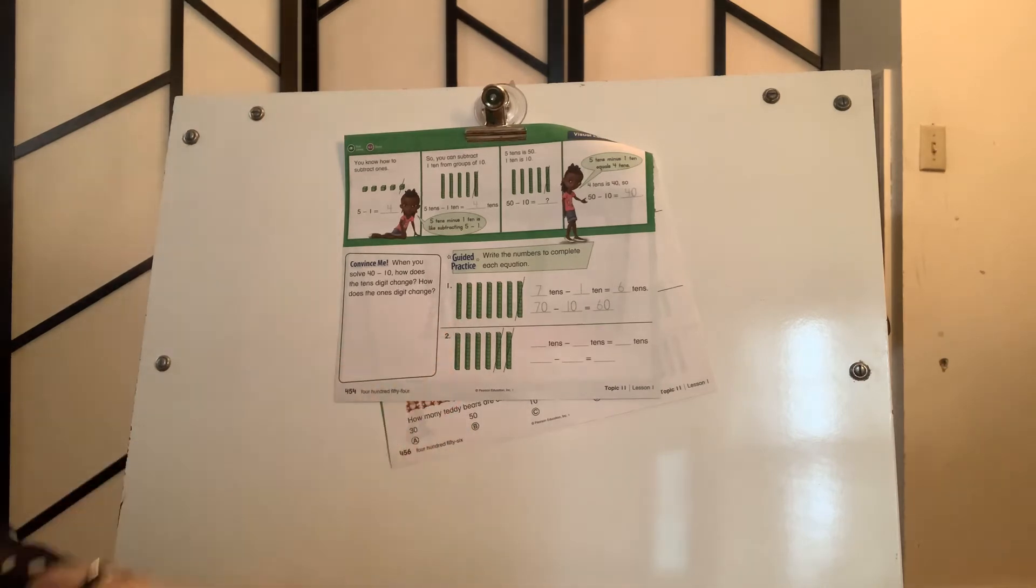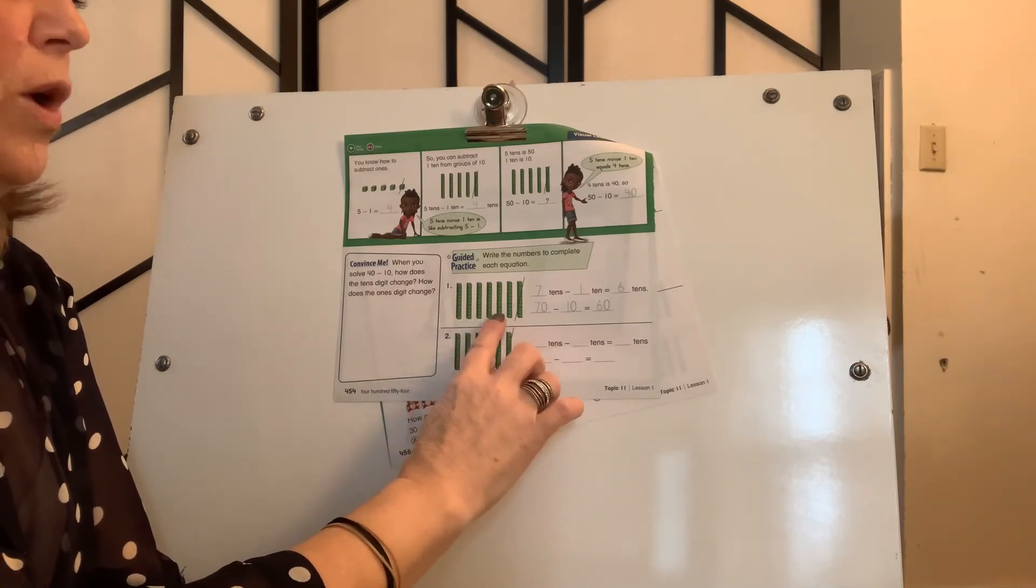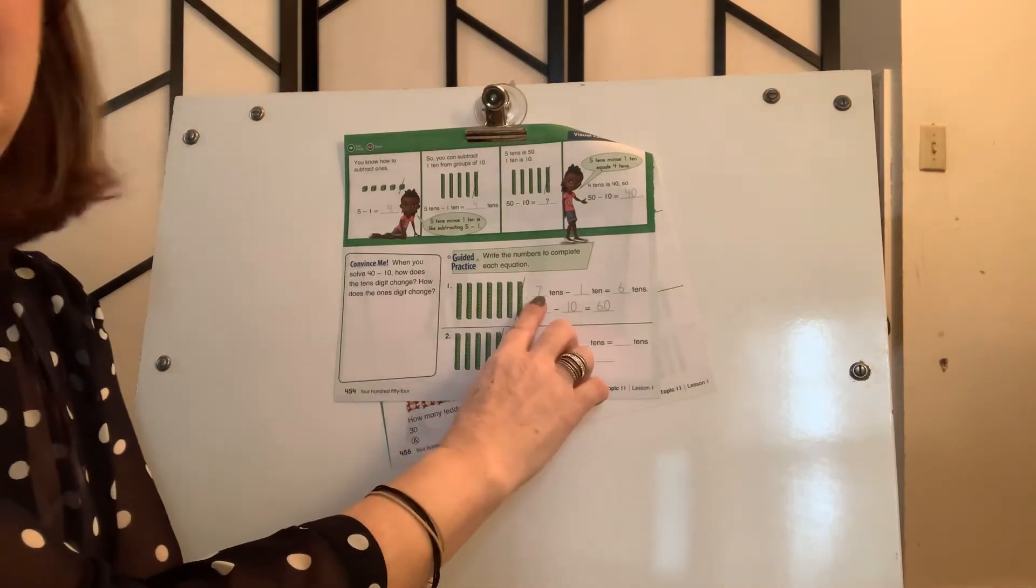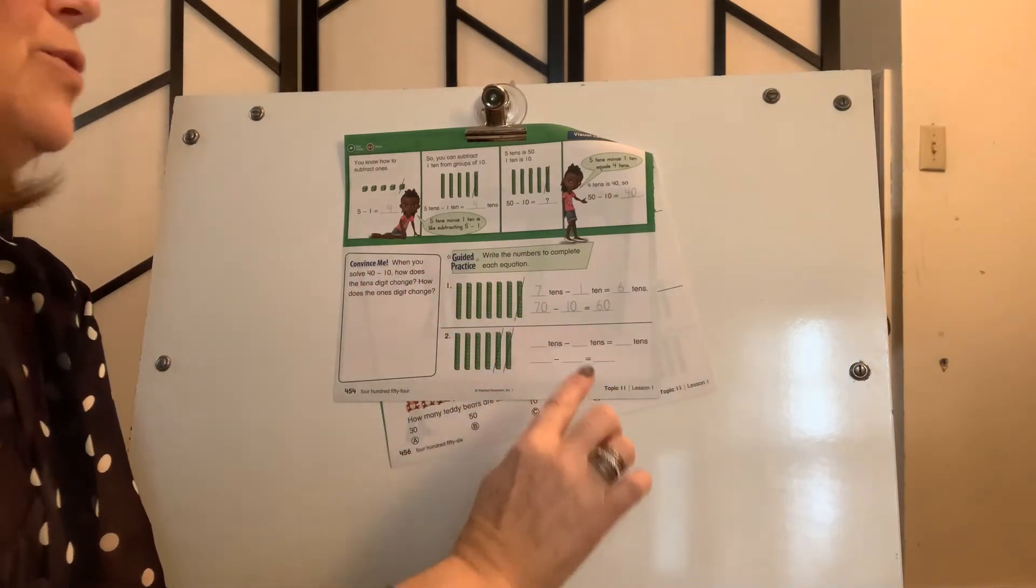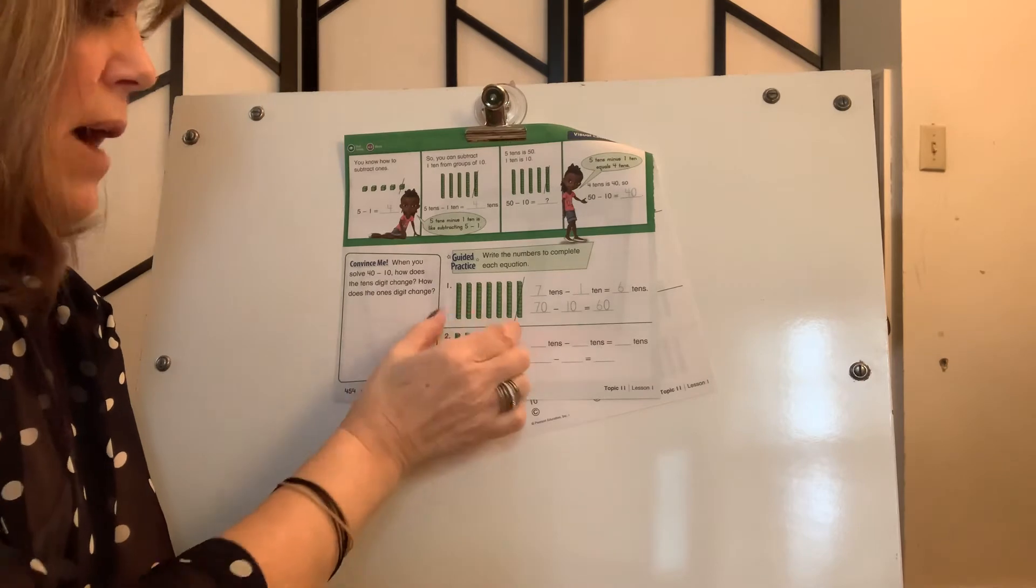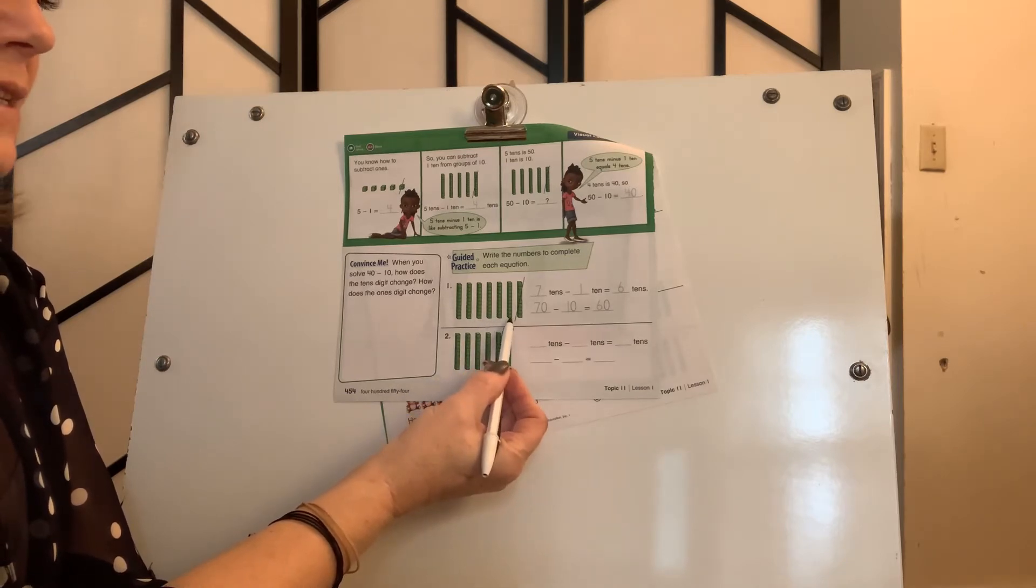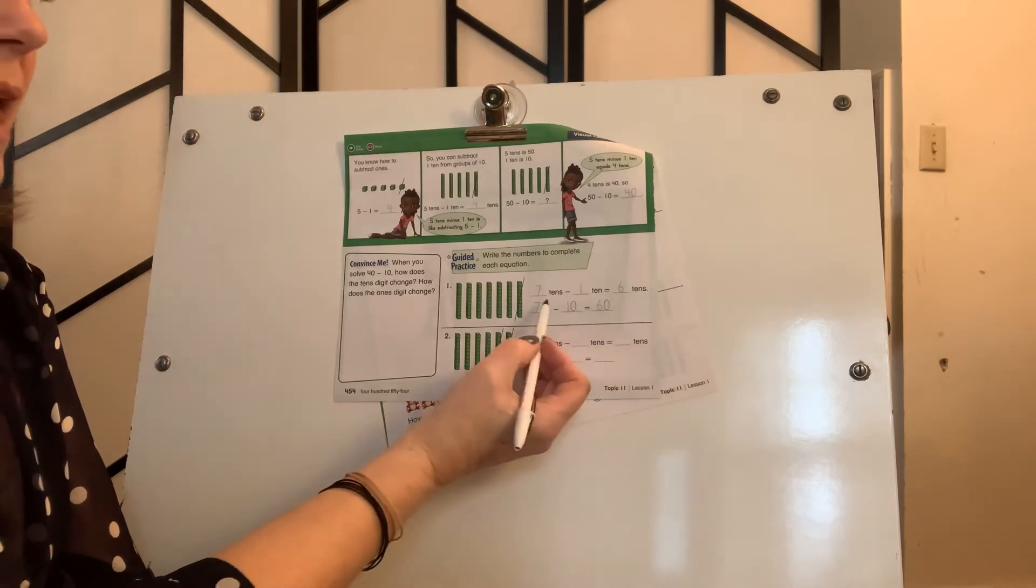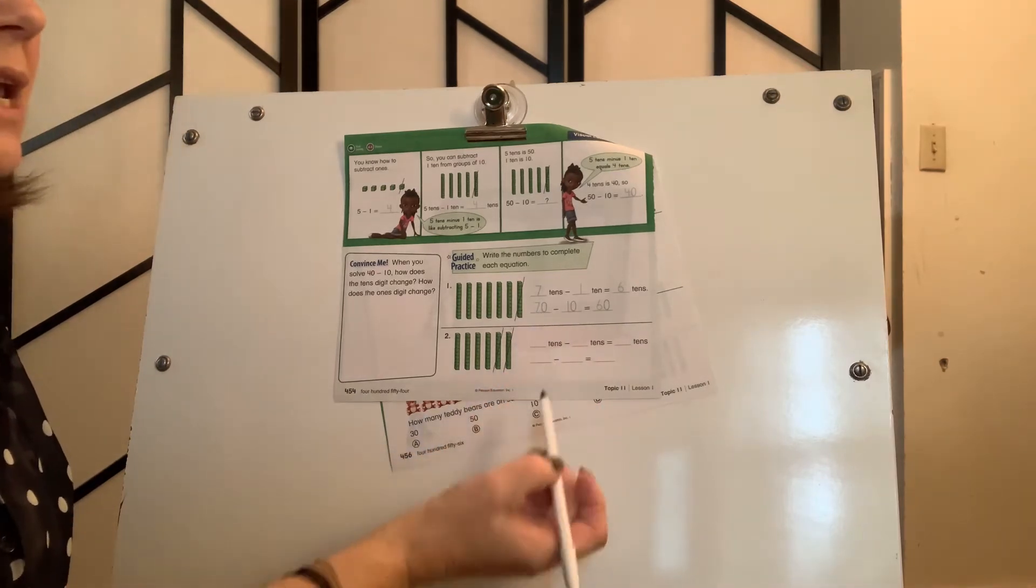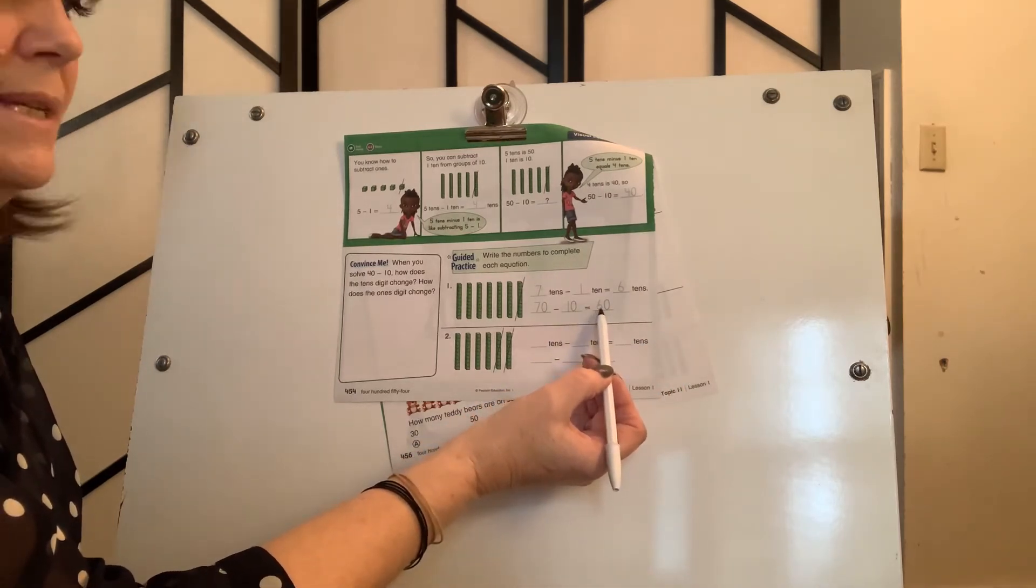All right. Now, let's do the next one together. Let's count how many longs I have. 1, 2, 3, 4, 5, 6, 7. All right. I have 7 10s. And you're just going to trace over all the numbers that the math book has in store for you. 7 10s minus 1 10. And do you see they crossed out one of our longs? So, how many do I have left? 1, 2, 3, 4, 5, 6. 6 10s. Now, we're going to take the words and turn them into numbers. 7 10s is really equal to 70. 1 10 is equal to 10. And 6 10s is equal to 60.